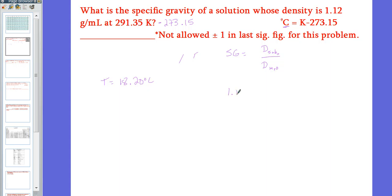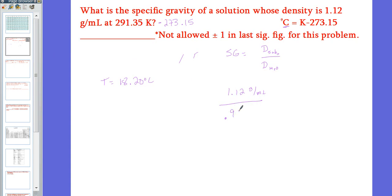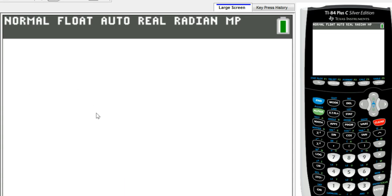So we have 1.12 grams per milliliter divided by the 0.998558 grams per milliliter for the water to get the specific gravity. And it's going to have no units. And then we're going to calculate 1.12 divided by 0.998558.